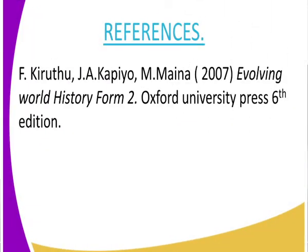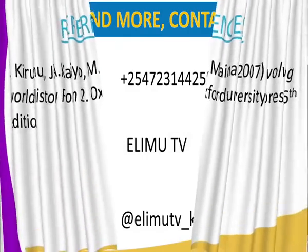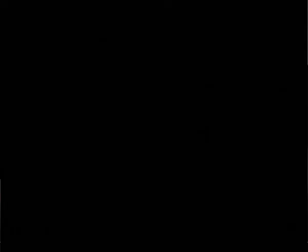Using our reference material, I recommend Evolving World History Form Two, sixth edition — remember we have got a number of editions, but let us use the latest, which is the sixth edition. This has been Elimu TV, a station where you watch and learn. You can contact us via our Facebook page, Twitter account at Elimu TV underscore Kenya, or send us a message at 0723-144259. Let us keep Elimu TV where we watch and learn.